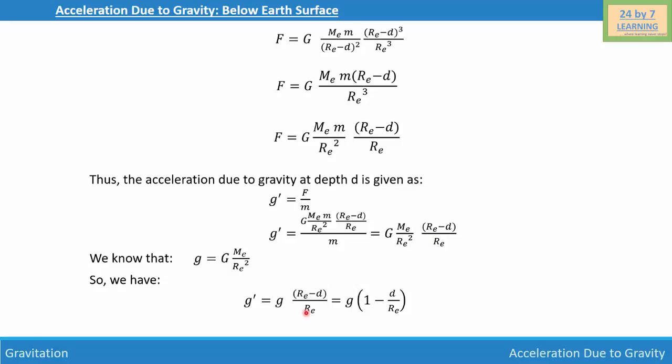Simplifying further, g' = g · (1 minus d/r_e). This is how we derive the acceleration due to gravity below the earth's surface.